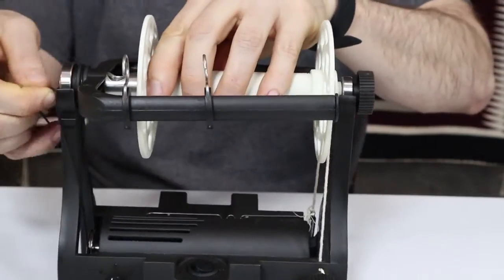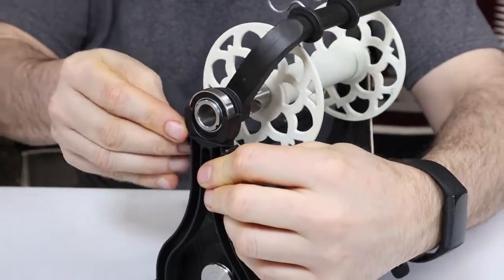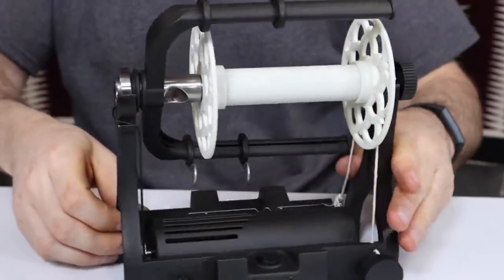You can easily change these large 8-ounce bobbins. First, take off the drive belt and put it on these hooks to hold it in place.